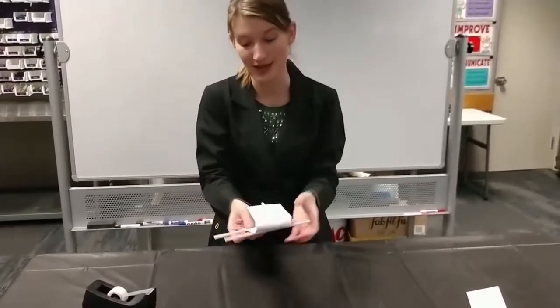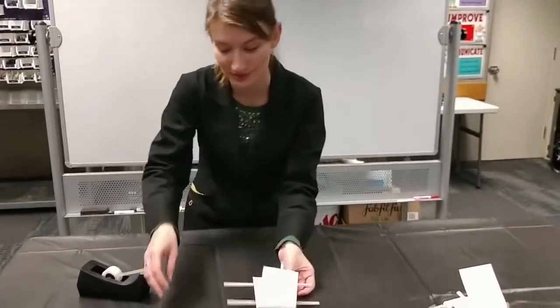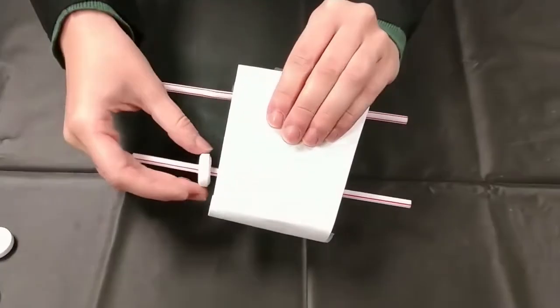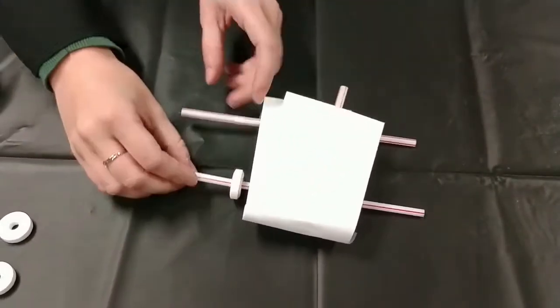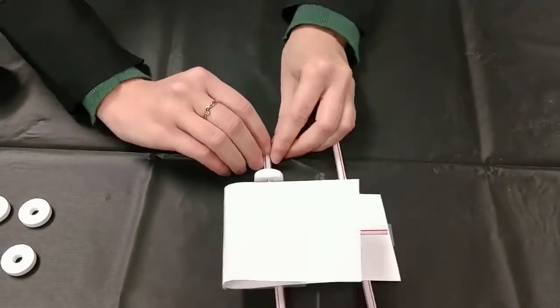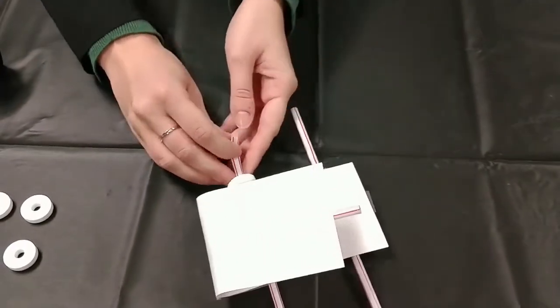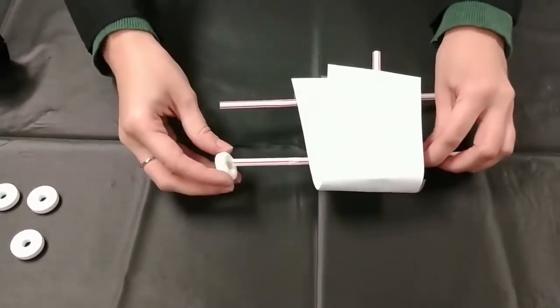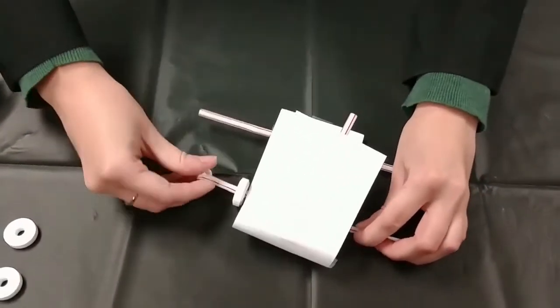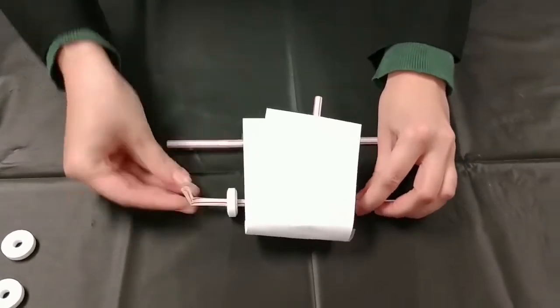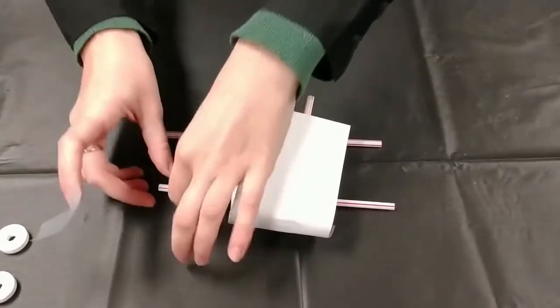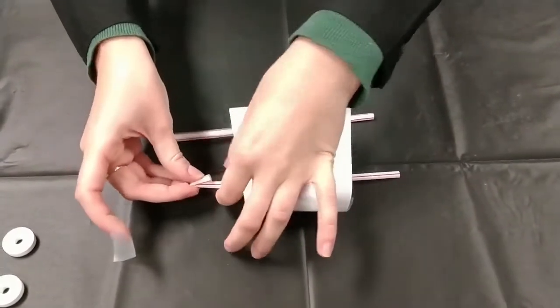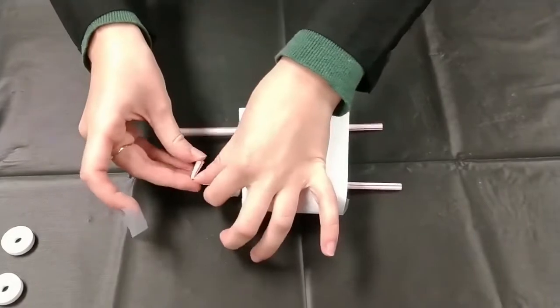So here's the first part of the mobile and now we have to add on our wheels, or it's not going to move. You're going to put on one of your lifesavers, one of your wheels. And then what you're going to do, because you don't want your wheel moving around and eventually rolling off, you're going to fold your straw over like that and tape it down.